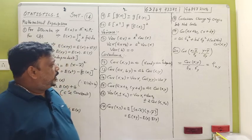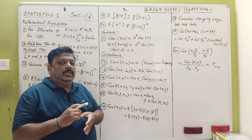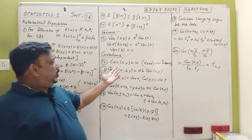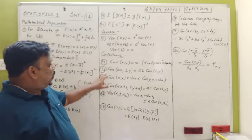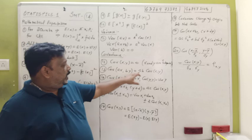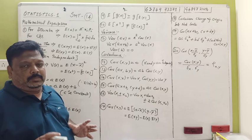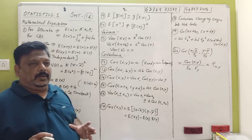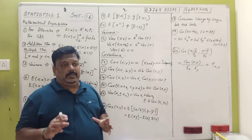You can see the covariance and the correlation. The covariance of X and Y — if X and Y are independent, the covariance equals 0. The formula for covariance is the same. If you can memorize the formula, you will have about 80% covered.